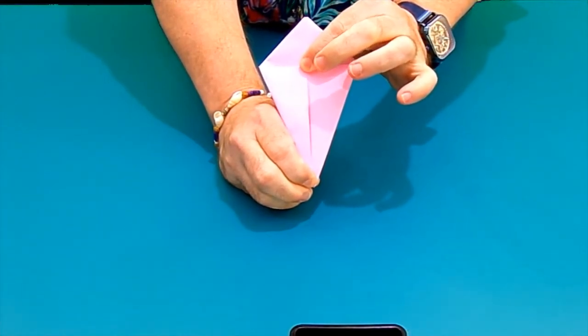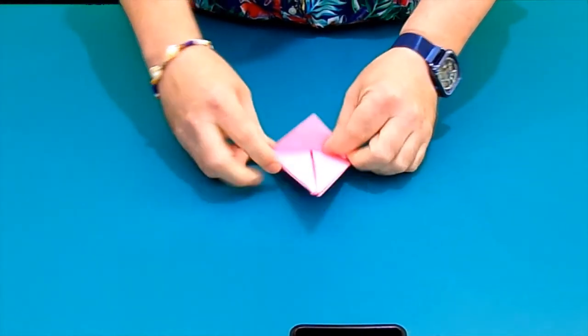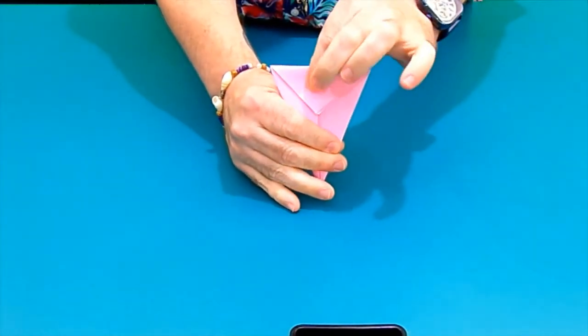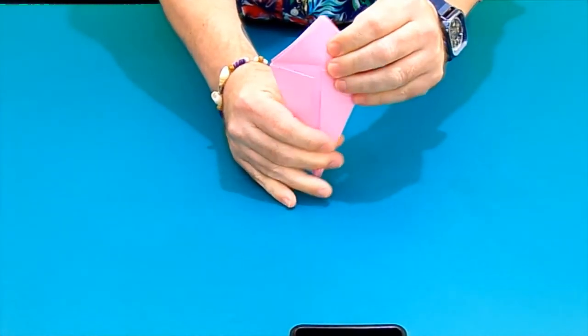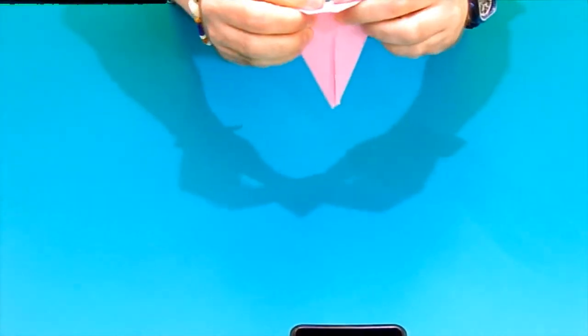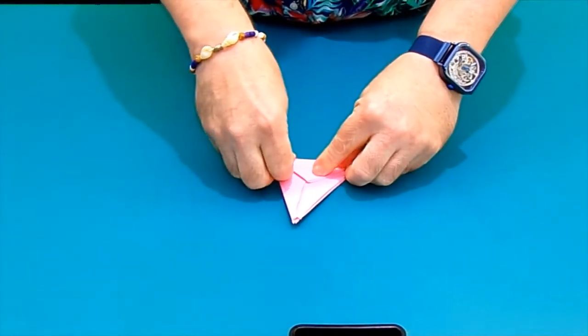There's two more things to do and we will have our bird base. What we need to do is we need to fold the top triangle like this down on this side. We turn it around. We turn it around and fold it. Basically all we're doing is making a crease at the top.